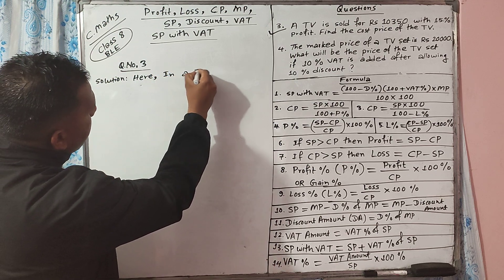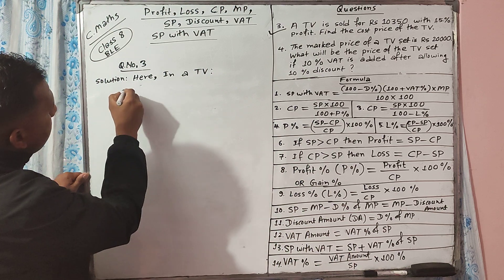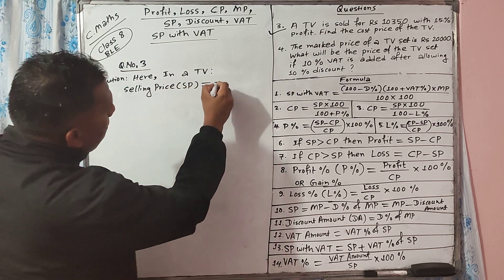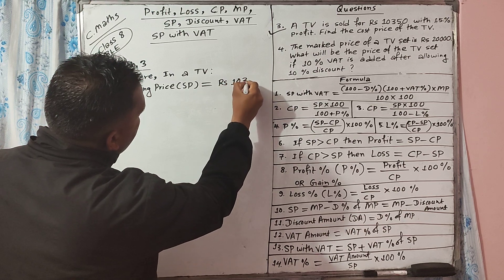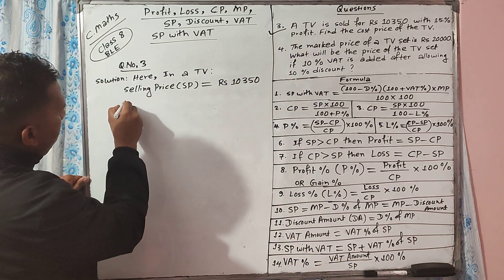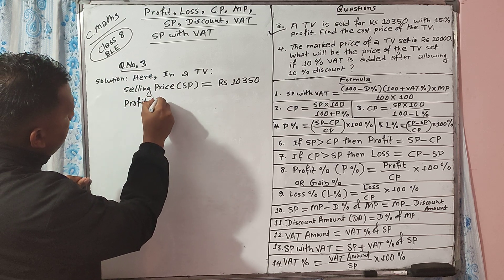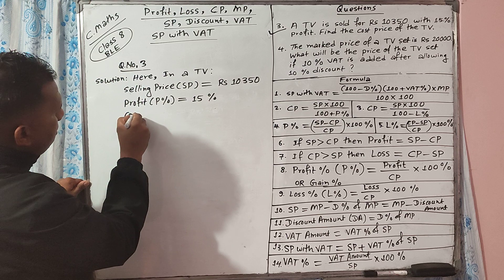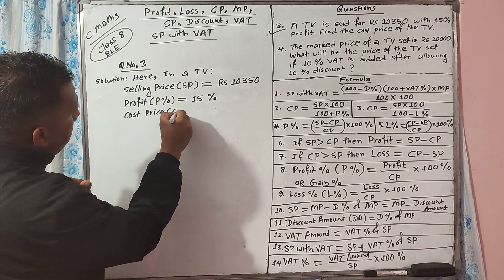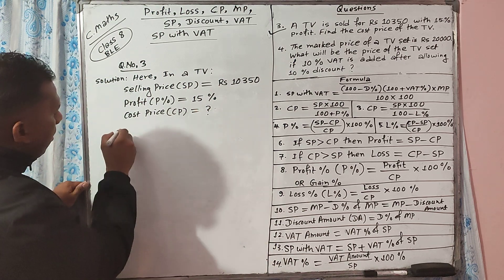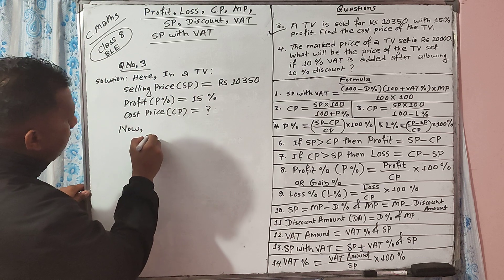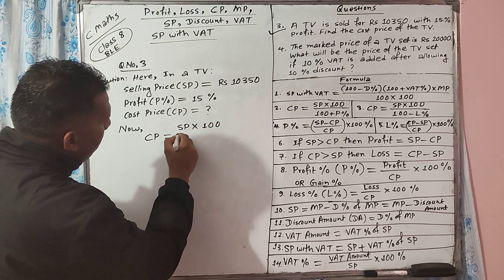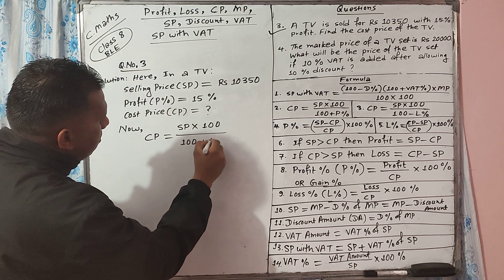For the TV, the selling price SP equals rupees 10,350. Profit percent is 15%. Now, we know that cost price CP equals selling price SP multiplied with 100, all upon 100 plus profit percent.